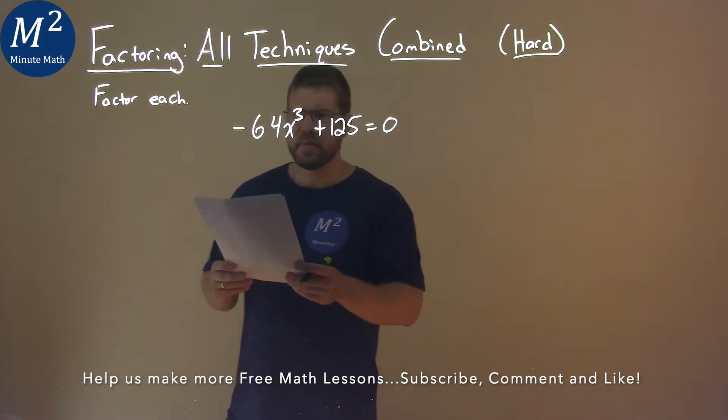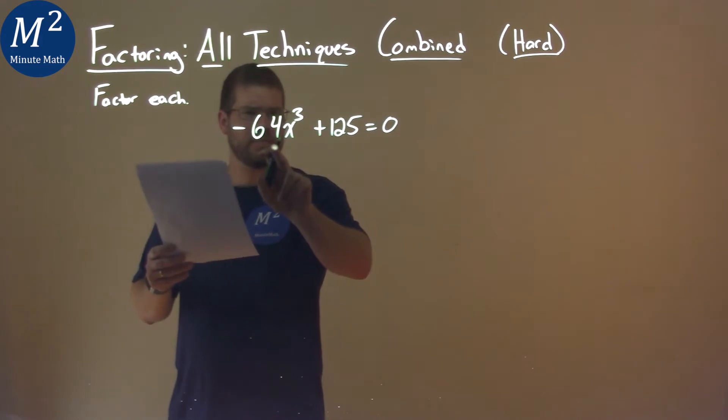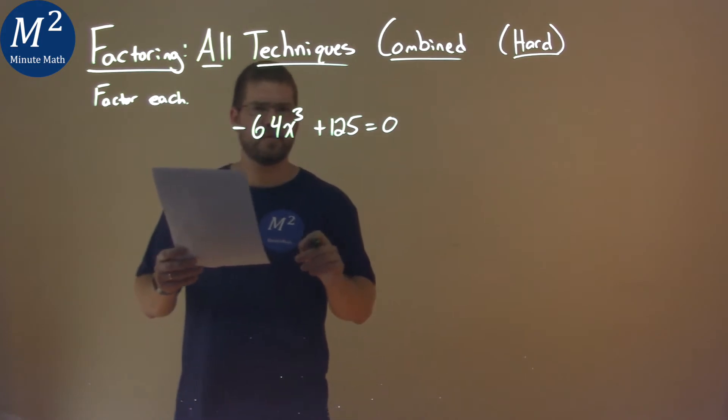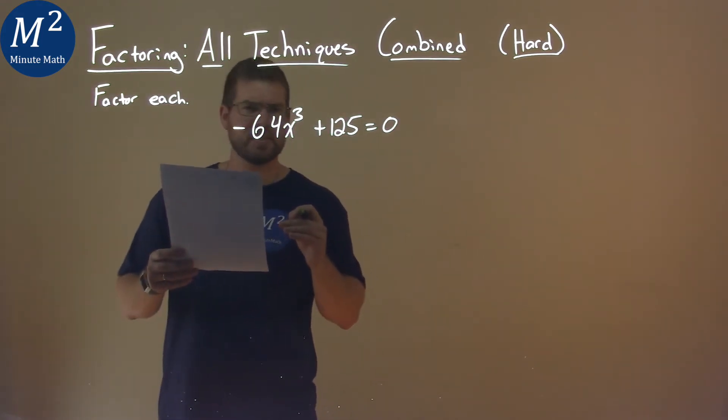So with that, we notice here it's a little difficult, right? Well, negative 64x to the third and 125, this almost looks like a sum of cubes formula.